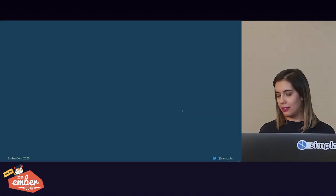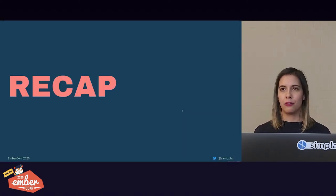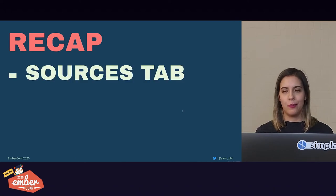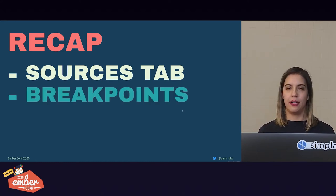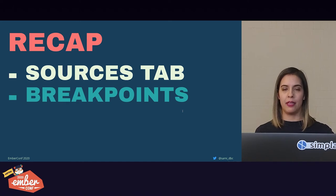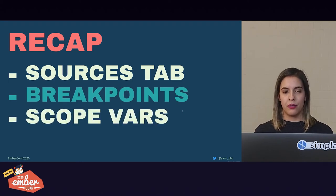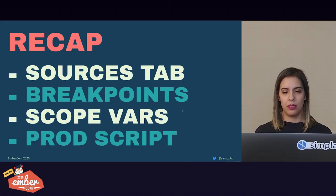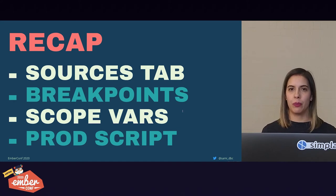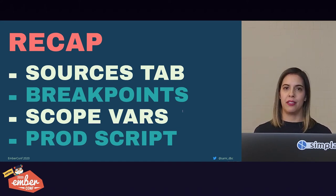A quick recap: you can do all the debugging on the sources tab without changing your code — just set breakpoints. In development the app is structured pretty much as it is on your computer. You can access the scope section to view and change variable values. In production the script will be all in one file, but you can use the prettify formatting and still debug there.